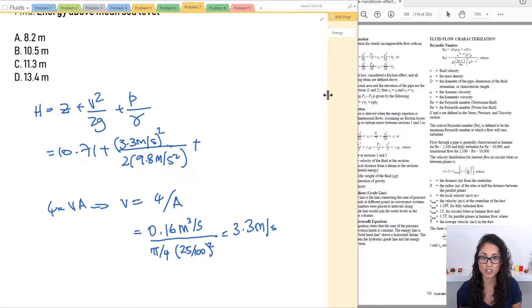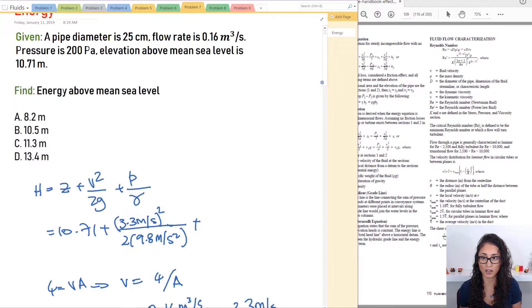Now the pressure was given to us in Pascal so we have 200 Pascal and gamma is 9.81 kilonewtons per cubic meters and Pascal the units for Pascal is newtons per meter squared.